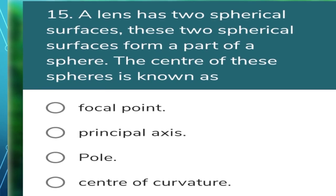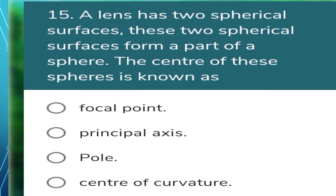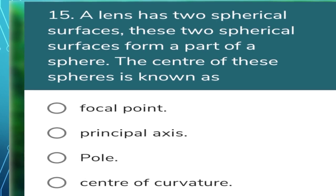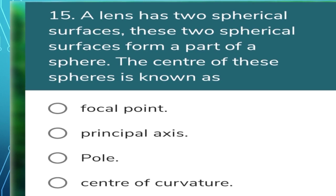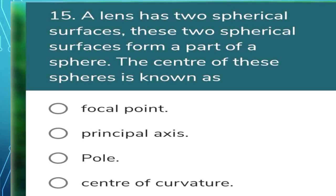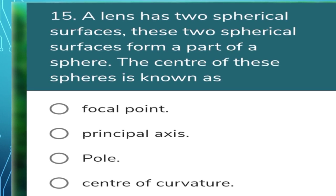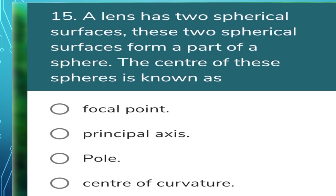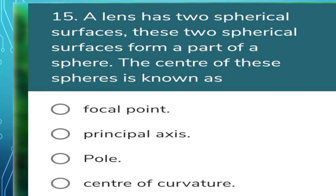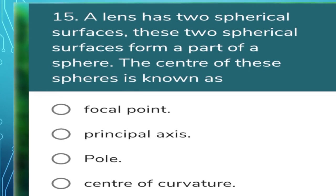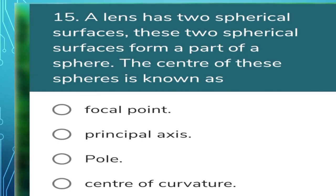A lens has two spherical surfaces, each forming part of a sphere. The center of each of those spheres is known as the center of curvature. So the center of curvature is the midpoint of the corresponding sphere.